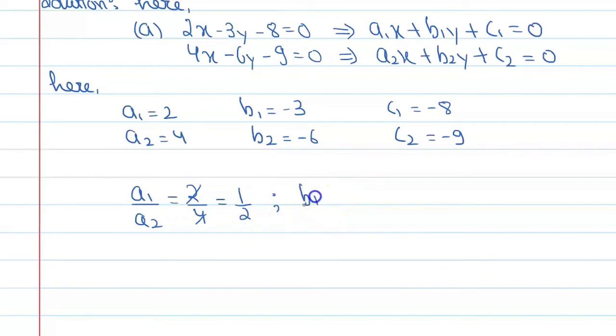Similarly, if you find B1 upon B2, you will get minus 3 upon minus 6. Cancel it and you will get 1 upon 2.